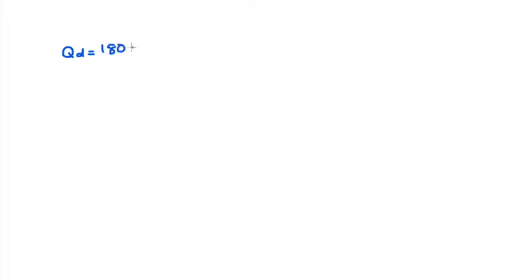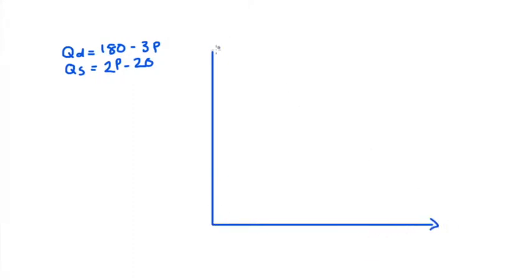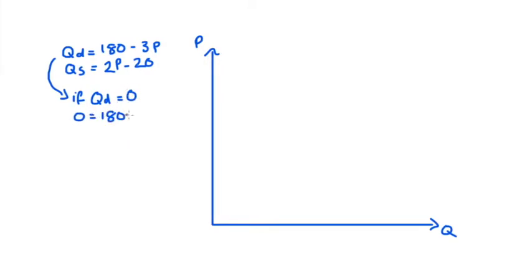In the problem I'm looking at today, I have a market demand curve QD = 180 − 3P and a market supply curve QS = 2P − 20. The first thing I'm going to do is draw these curves out, starting with the demand curve. I'll isolate the price and quantity axis intercepts. Setting QD = 0 and solving for P gives P = 60, so that's our price-axis intercept.